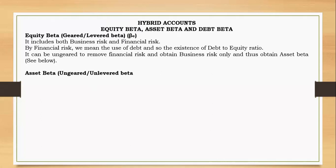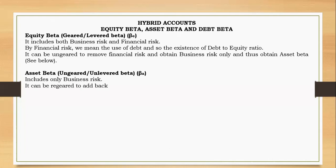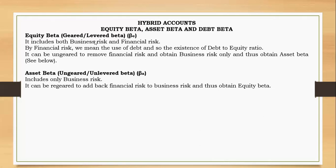Asset beta is called the ungeared or unlevered beta. After eliminating financial risk, it contains only business risk. If you need to go back to equity beta, we say it can be regeared — by adding financial risk back to business risk. So by regearing, you add financial risk to business risk and obtain equity beta, which contains both business risk and financial risk.